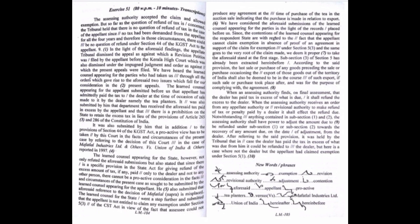The learned counsel for the state went a step further and submitted that the appellant is not entitled to claim any exemption under section 5 of the CST Act in view of the fact that SSC could not produce any agreement at the time of purchase of the tea in the auction sale indicating that the purchase is made in relation to export.